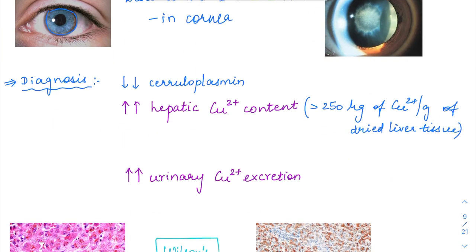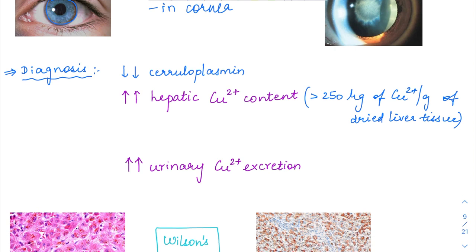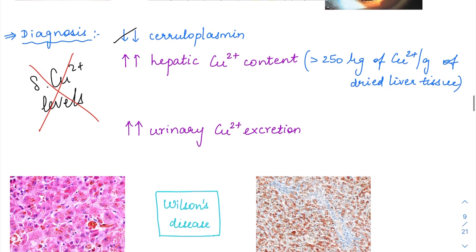How do you diagnose Wilson's disease? First, measure ceruloplasmin levels, which will be reduced. It is not useful to measure serum copper levels—they're variable, so serum copper levels are of no use. Remember that. You can measure decreased ceruloplasmin levels.